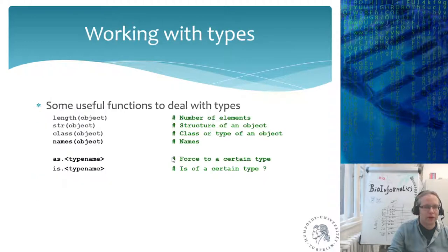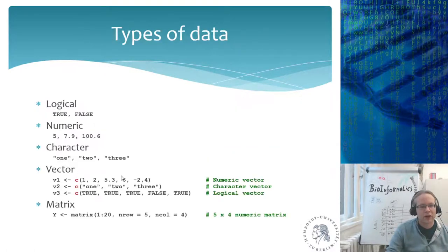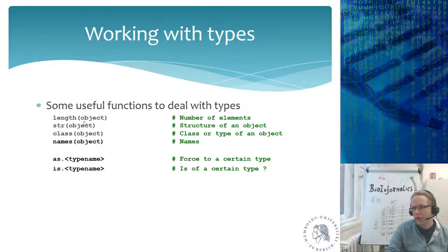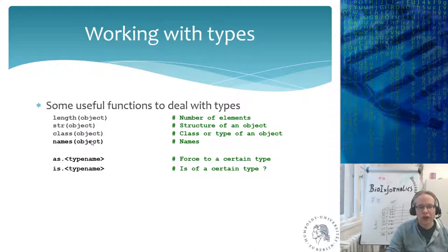When dealing with types, especially vectors, some useful functions include: length, which gives you the length of the vector — so if vector v1 contains six elements, length(v1) returns 6. str shows you the structure of an object, which is very useful for multi-level lists. class tells you which class or type an object has — numeric, logical, or character. names allows you to get or set the names on a vector; you can assign into the names function using the arrow.